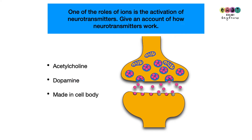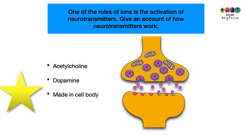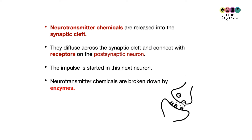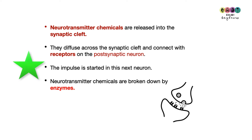Next question: one of the roles of ions is the activation of neurotransmitters. Give an account of how neurotransmitters work. Know two examples — acetylcholine and dopamine — and know that neurotransmitter chemicals are made in the cell body. The neurotransmitter chemicals are released into the synaptic cleft, triggered by the nerve impulse arriving at the synaptic knob. They diffuse across the synaptic cleft and bind with receptors on the post-synaptic neuron, starting the impulse in the next neuron. The chemicals are broken down by enzymes, the products reabsorbed, and more neurotransmitter chemicals are made.